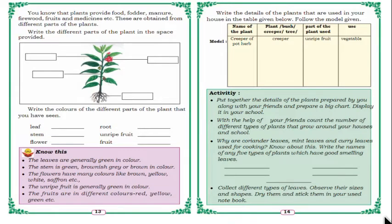In your textbook, page number 13, you will know that plants provide food, fodder, manure, firewood, fruits and medicines etc. These are obtained from different parts of the plants. Not only do we use plants as food or vegetables — they also give us fodder, manure, firewood, fruits and even medicines.